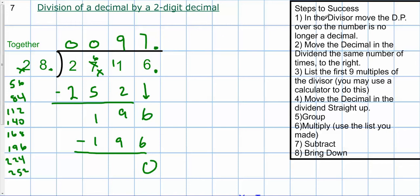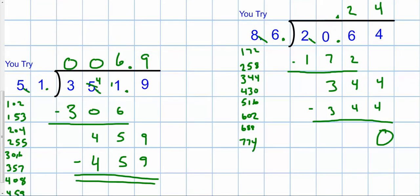So go ahead and give the video pause. I want you to try the two beneath. So here are the two problems. 35 and 19 hundredths divided by 5 and 1 tenths. I came up with 6 and 9 tenths. And for 2 and 64 thousandths divided by 8 and 6 tenths, I got 24 hundredths.